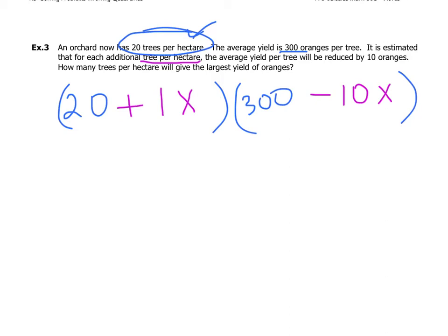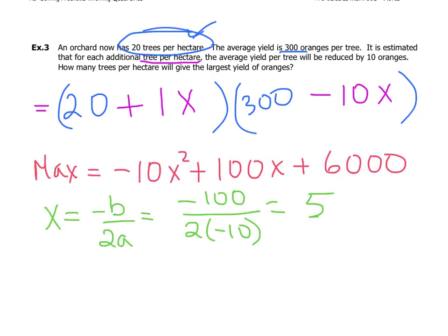We do the exact same thing: set up two brackets, multiply through to get the quadratic, find the x-value of the vertex to maximize yield. Hit pause and try it. The x-value of the vertex turns out to be five, which means we add five more trees to maximize orange yield.